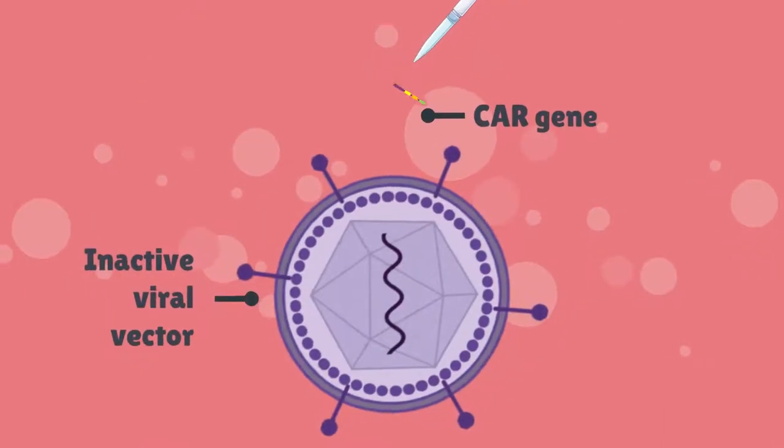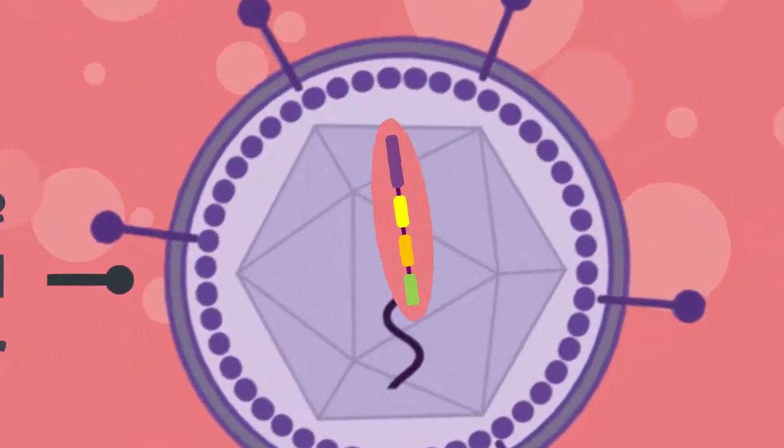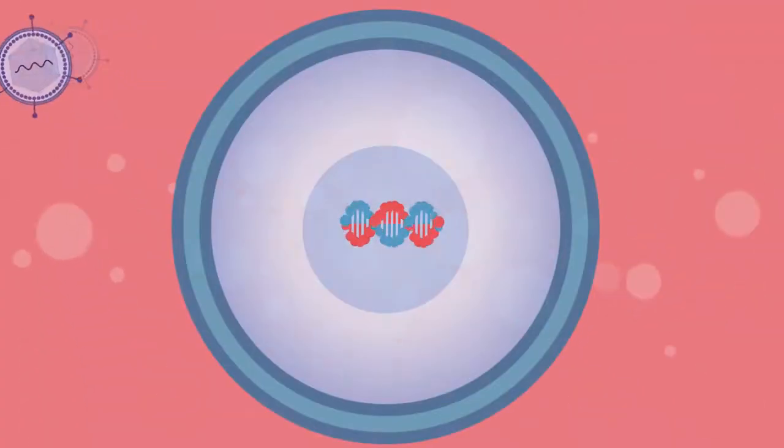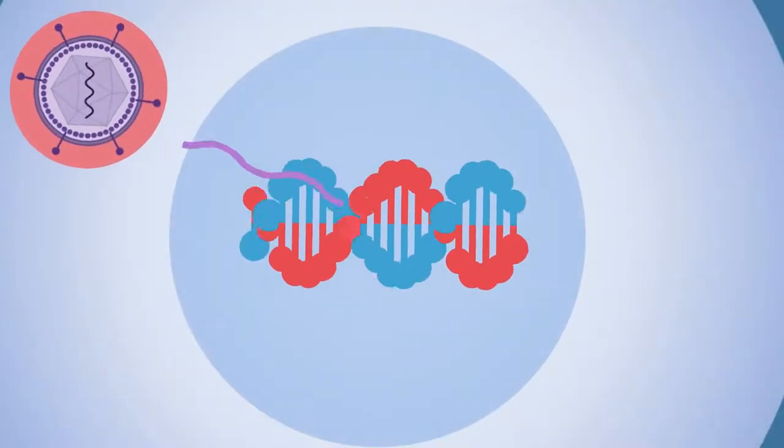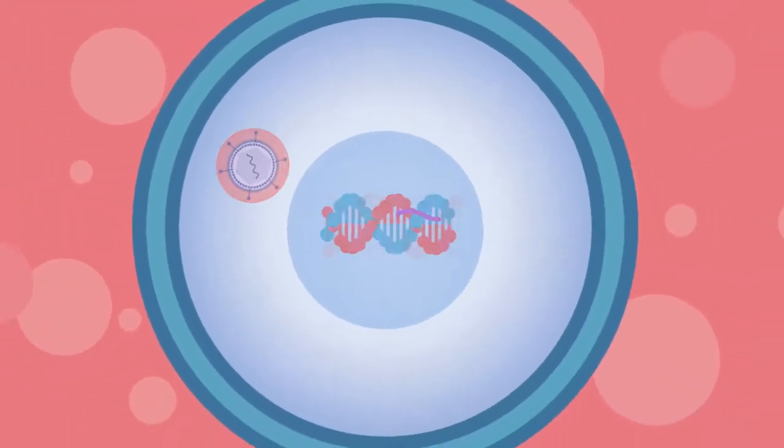The viruses are packaged with the CAR genes and then the T-cells are transduced with the virus. The vector inserts the CAR DNA into the host T-cells and they are now able to produce these CARs.